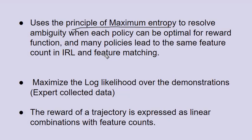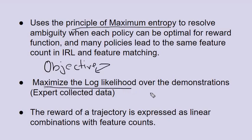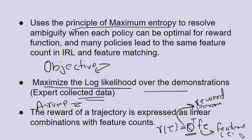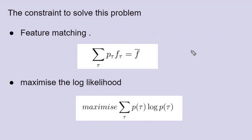The objective is to maximize the log likelihood over the demonstrations from expert-collected data. One of the most important assumptions in this paper is that the reward of trajectories is expressed as a linear combination of feature counts — specifically, reward of trajectory tau equals theta transpose f(tau), where theta is the reward parameter vector and f(tau) is the feature vector of the trajectory. So reward is simply a linear function of trajectory features.